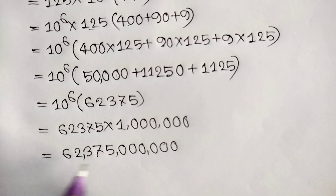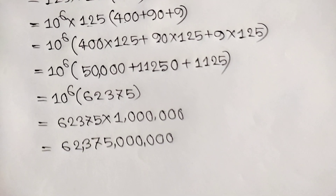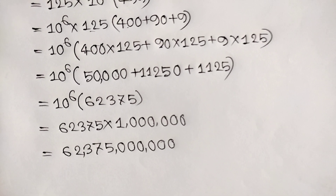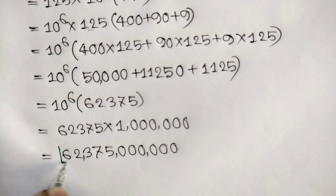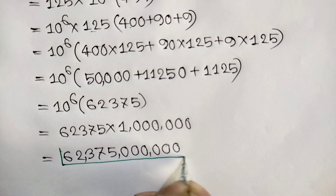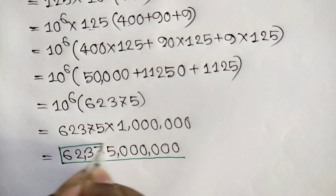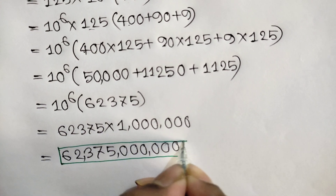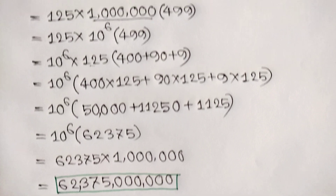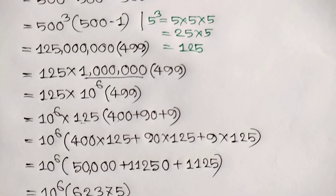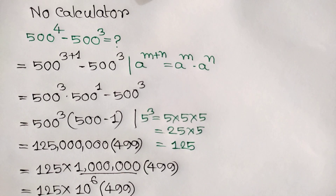Multiplying by 10 to the power 6, we get 62375 with 6 zeros, which is 62,375,000,000. This is our final answer. Thanks for watching — if you like this video please subscribe to my channel and see you in the next video.